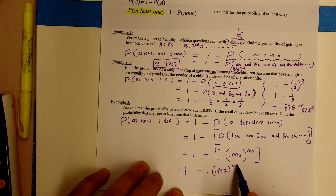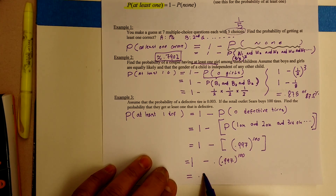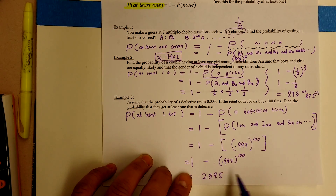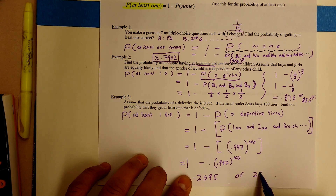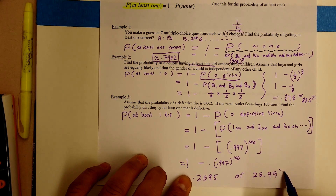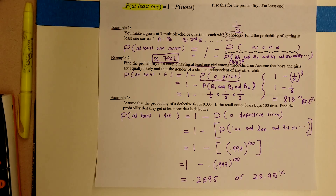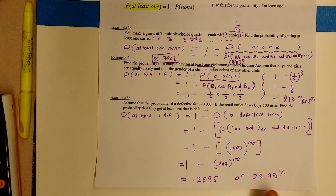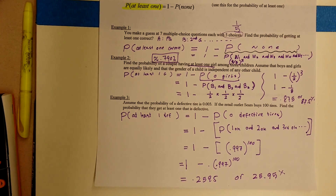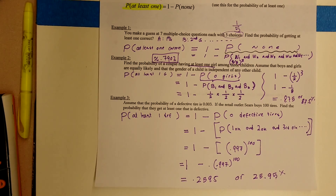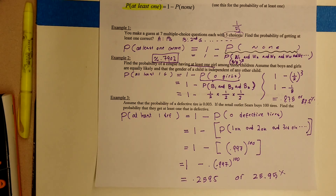So 0.997 to the 100th power, calculated on a calculator, gives us 25.95%. This means that if Sears buys 100 tires, there is a 25.95% chance that they're going to get at least one tire that's bad — so they're going to have to return at least one tire, because the percentage of getting a defective one is actually kind of high.